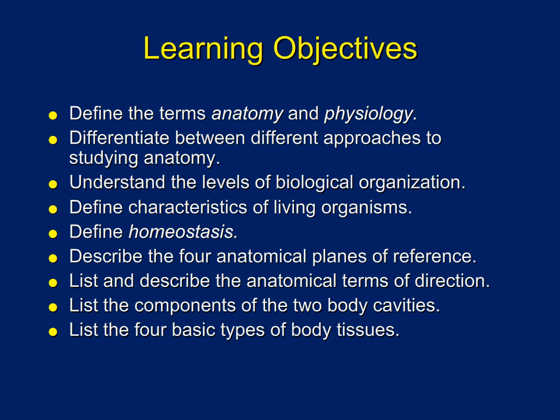We're also going to describe the four different anatomical planes of reference, and we're going to talk about directional terms and anatomical regions of domestic animals. And finally, at the end of the lecture, we're going to list the four basic types of body tissues.